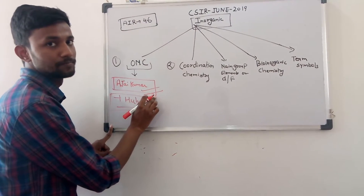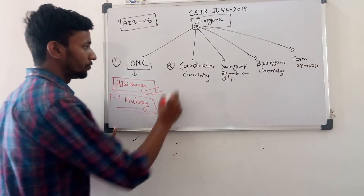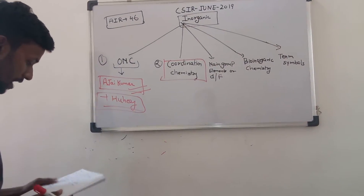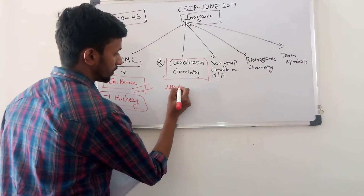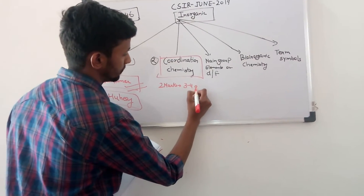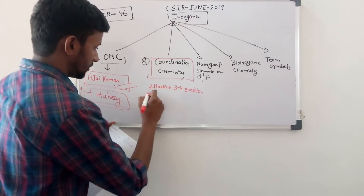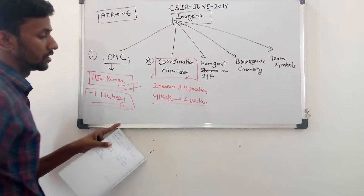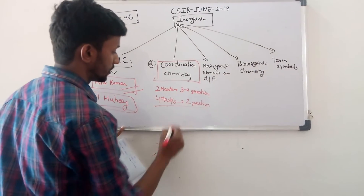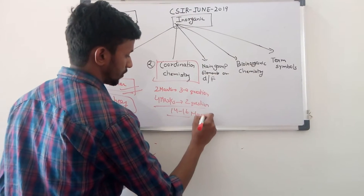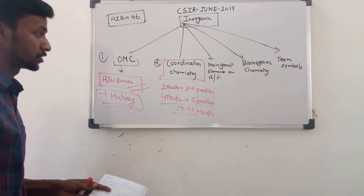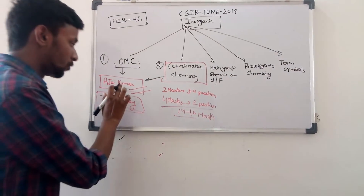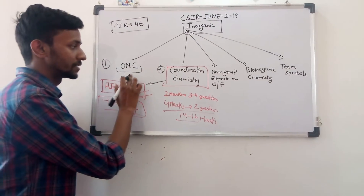My best suggestion is to read Ajay Kumar at least twice. Now, coordination chemistry is the second most important topic in inorganic chemistry. The stats for coordination chemistry: around three to four two-mark questions will be asked, and definitely two four-mark questions, giving you around fourteen to sixteen marks from coordination chemistry. I suggest you follow the same book - Ajay Kumar - for coordination chemistry. Once you read this book, try to solve previous year questions from organometallic chemistry and coordination chemistry.